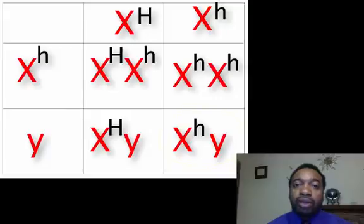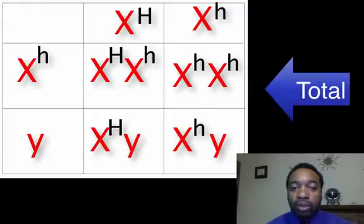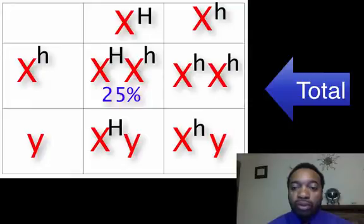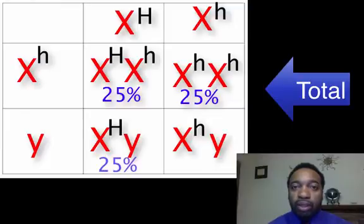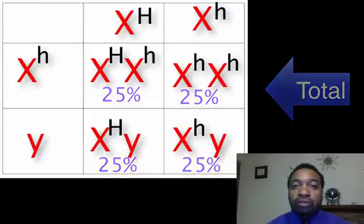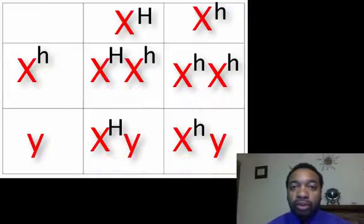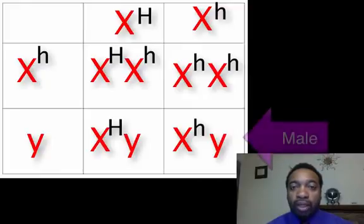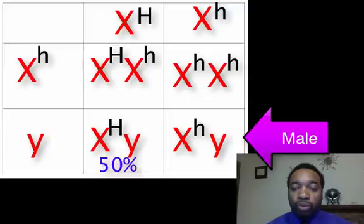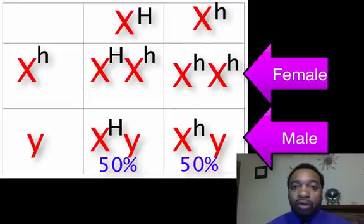When giving our percentages, we can do it in one of two ways depending on the question. If the question is out of the total, you would say one fourth or 25% are normal carrier females, 25% females with hemophilia, 25% normal males, and 25% males with hemophilia. If the question is out of the gender, you look at males first: 50% are normal and 50% have hemophilia. Out of females: 50% are normal carriers and 50% have hemophilia.